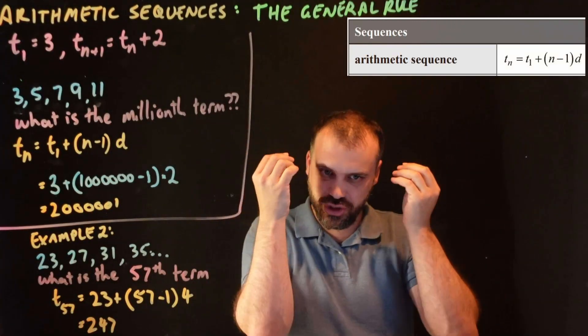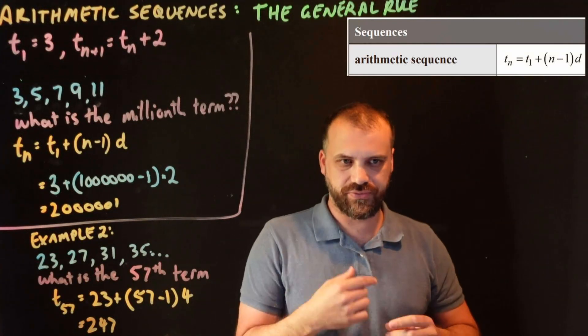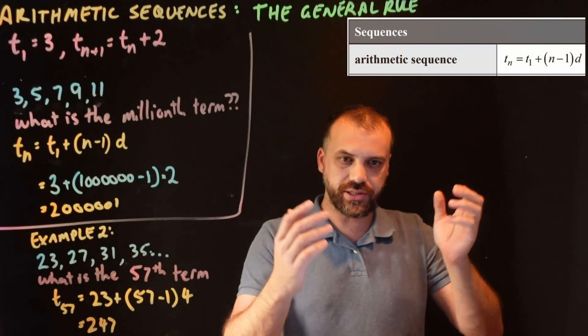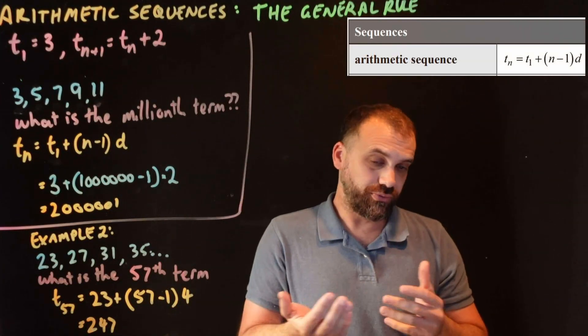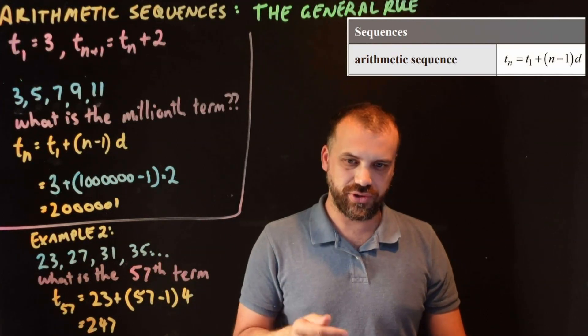That's the arithmetic sequence. That's the general rule. In a future video, we're going to do some more with this formula, because if you've got a bunch of variables in a formula, we've got four different things in this formula, we can ask you to find all four of those. In these ones, we're just finding what the nth term is, the millionth term, the 57th term.